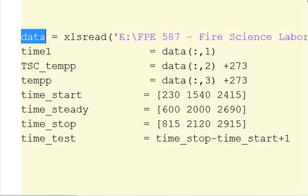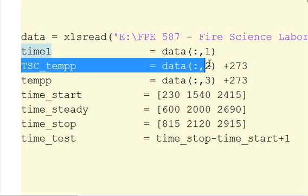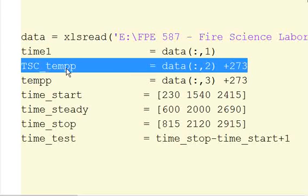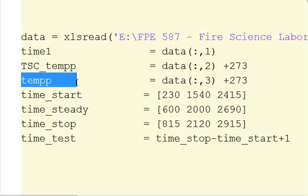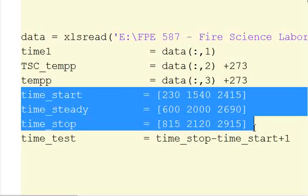So data is everything that came in from the Excel file, and then we have a timestamp, which is data first column, the thermocouple or thin-skinned calorimeter temperature is the second column, and we're going to make it an absolute temperature. We're going to change it to a Kelvin scale. And then this temp is our substrate temperature. They should probably be labeled a little bit better, but that's all right. And then we have some timestamps.